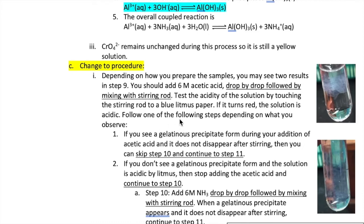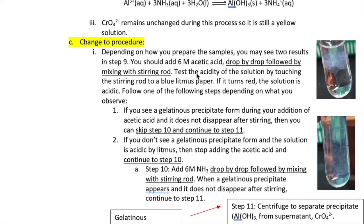If you don't see a precipitate when you're adding your acetic acid, then what you want to do is touch your stirring rod to a blue litmus paper to see if the solution is acidic. If it's not, what you want to do is repeat adding another drop of acetic acid, mix it, and then check again for the precipitate. Again, if you don't see any precipitate, you're going to touch your stirring rod to a blue litmus paper to check for the acidity of the solution. You're going to keep repeating that until one of two things happen: either you see a gelatinous precipitate or the solution becomes acidic by litmus.